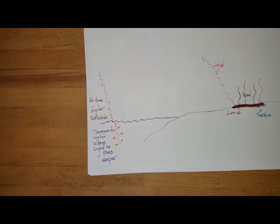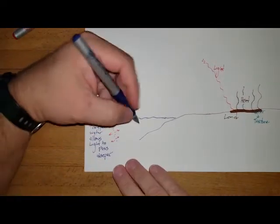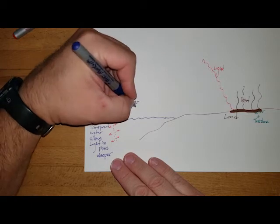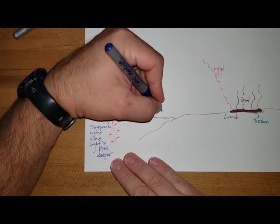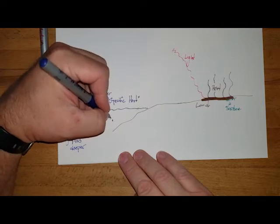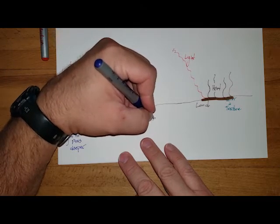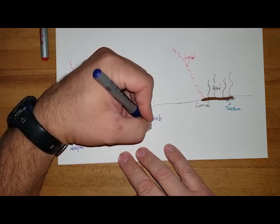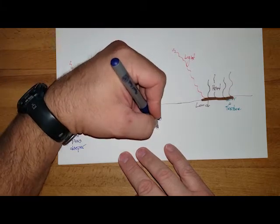The other thing is a big difference between water and land: water has a higher what's called specific heat. What does that specific heat mean? Well, the specific heat is the ability to absorb and retain energy. So water has a higher ability to absorb and retain energy.